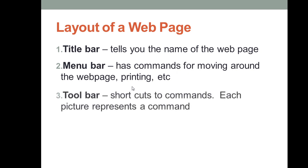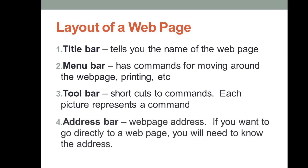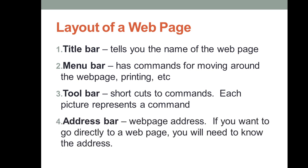The toolbar provides shortcuts to different commands you can click on. The address bar shows the web page address — if you want to go directly to a web page you need to know the address, which is the URL. This address bar is known as the Uniform Resource Locator bar, and here you enter your URL. That is basically the layout of a web page. I hope you have understood the layout, what a web page is, and the differences between the internet and the web. Thank you everyone.